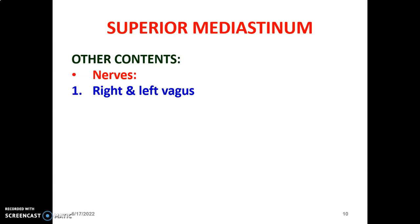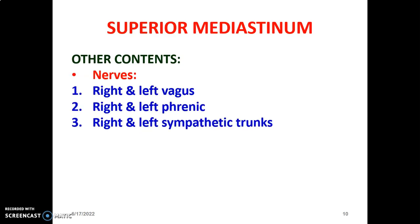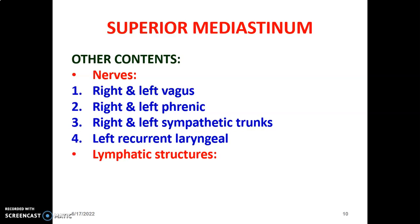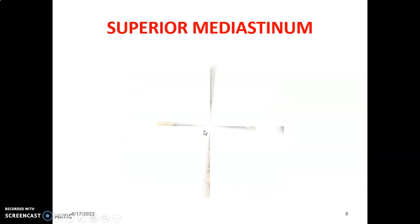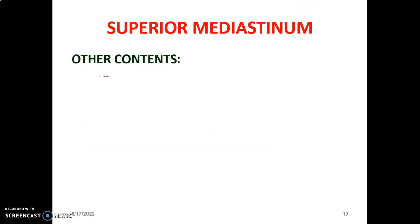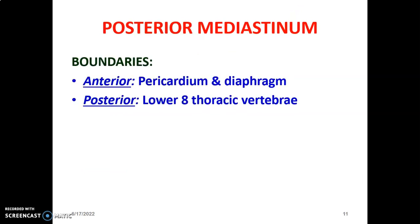Other contents of the superior mediastinum include nerves: the right and left vagus nerve, the right and left phrenic nerve, the right and left sympathetic trunk, as well as the left recurrent laryngeal nerve. Lymphatic structures include the thoracic ducts and lymph nodes. The recurrent laryngeal nerve lies between the trachea and esophagus, and you can appreciate the vagus nerve and phrenic nerve as components of the superior mediastinum.